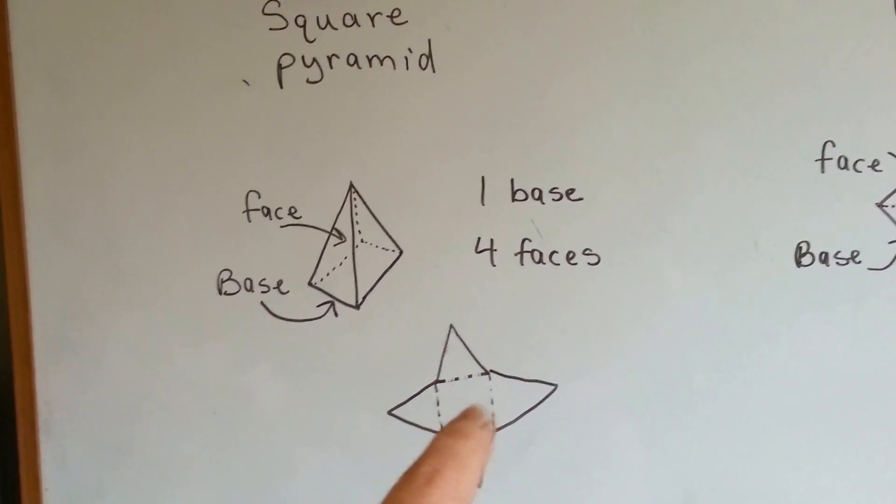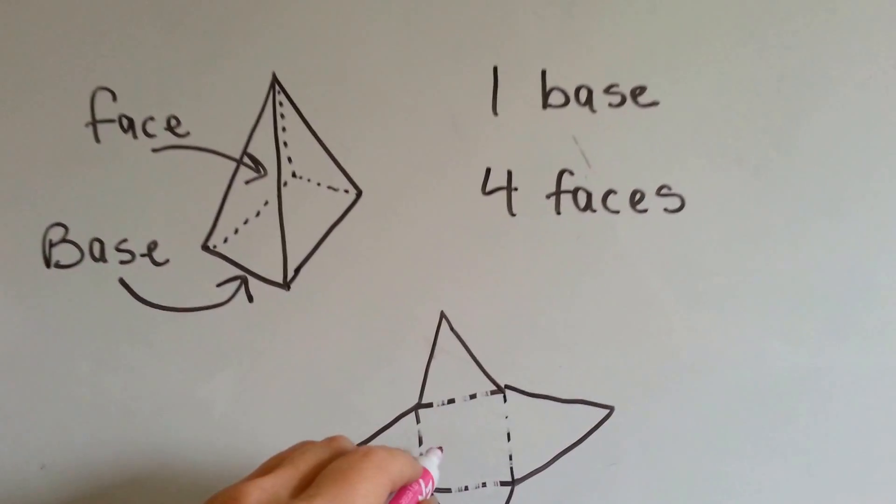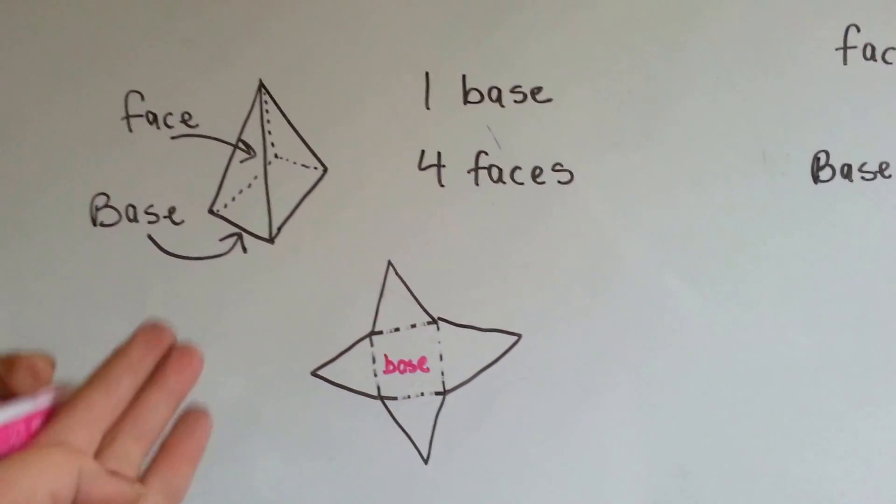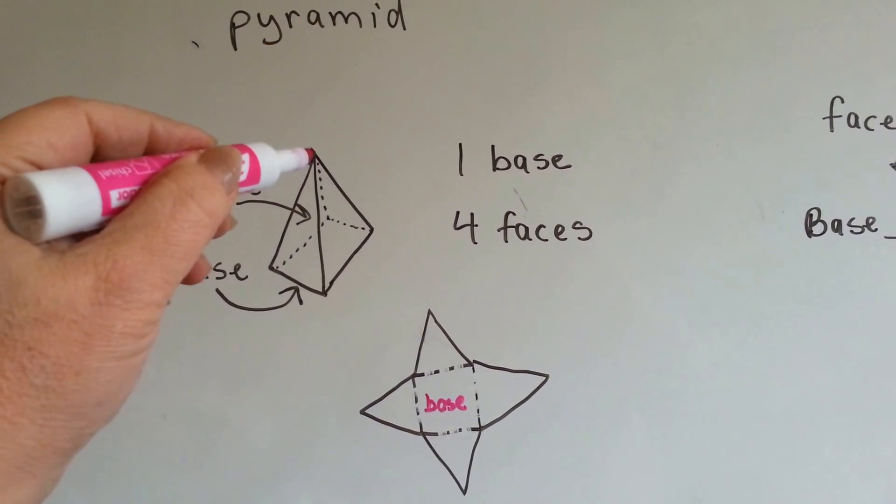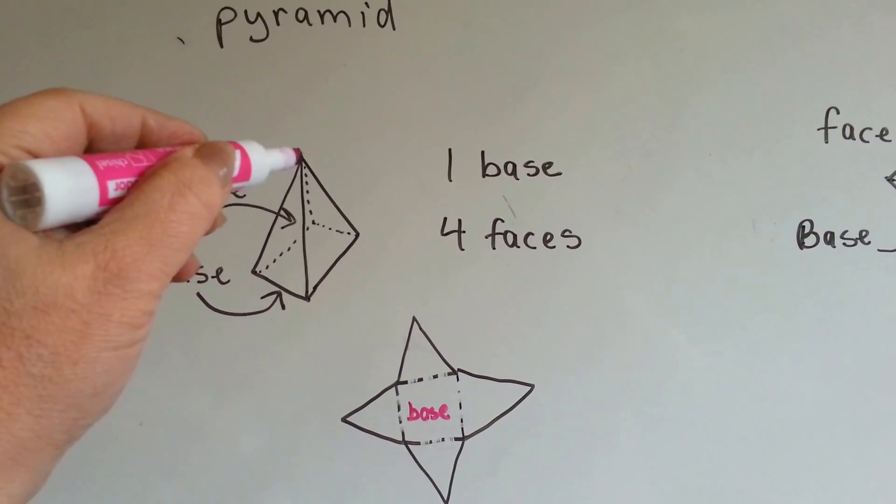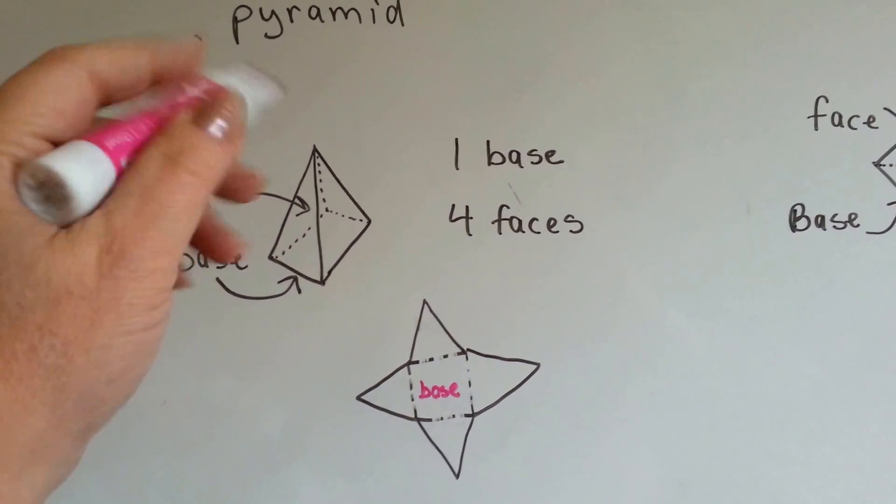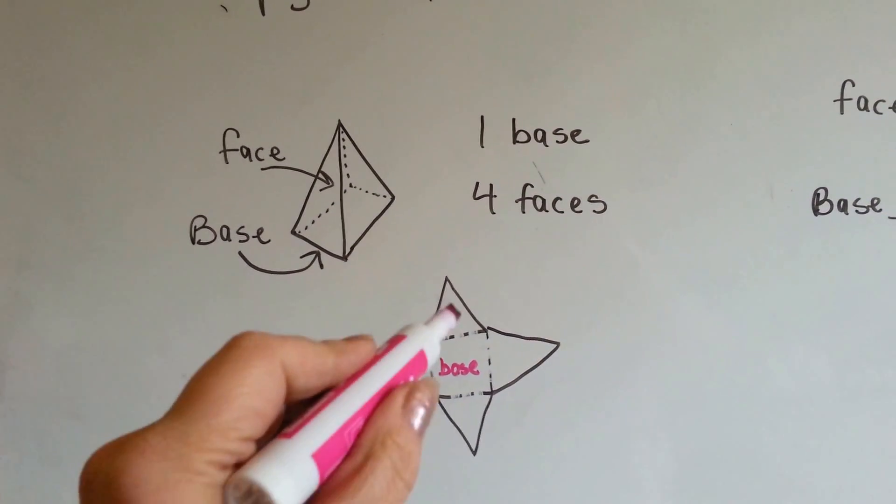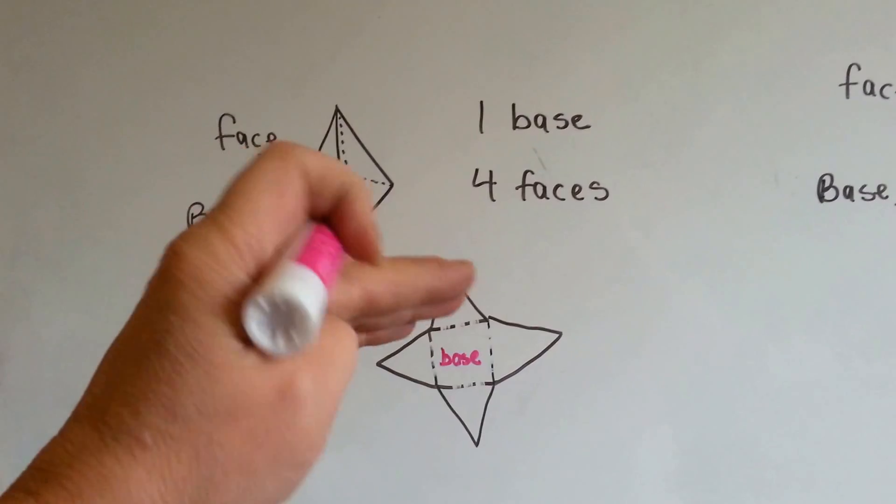So if this was the base right here in the center, and you unfolded each one of these points from this apex right here where they all meet, if you opened it up and let them fall down, they would look like this. And then if you folded them back up again, it would go back into a square pyramid.